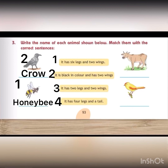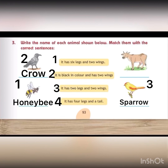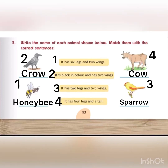Then, it has two legs and two wings. You can see another bird with two legs and two wings — write sparrow. Then, it has four legs and a tail. Which animal has four legs and a tail? It is drawn here — it is cow. Write cow and match it.